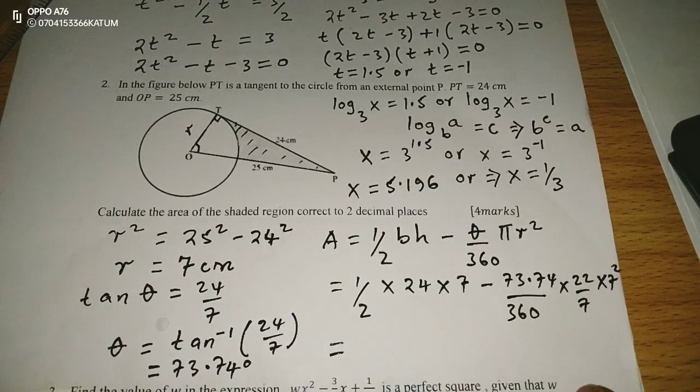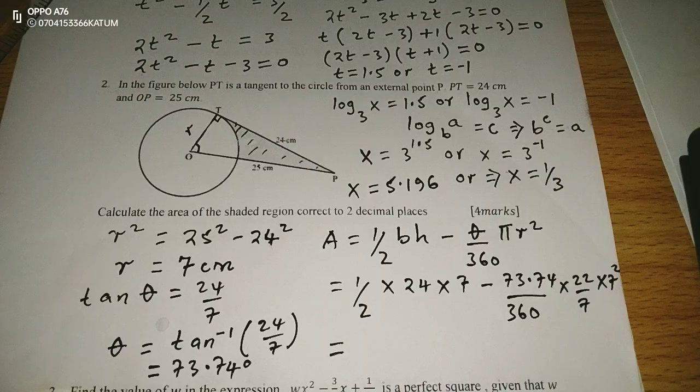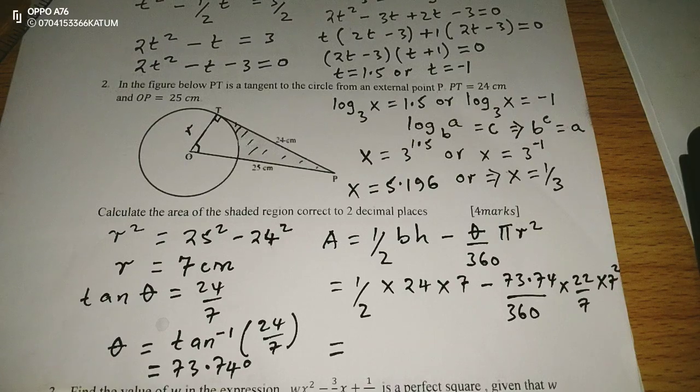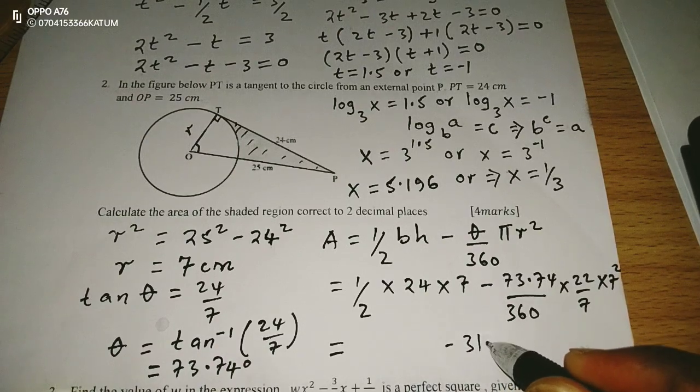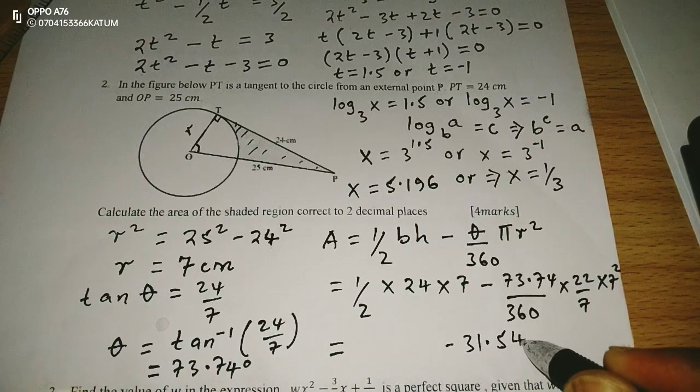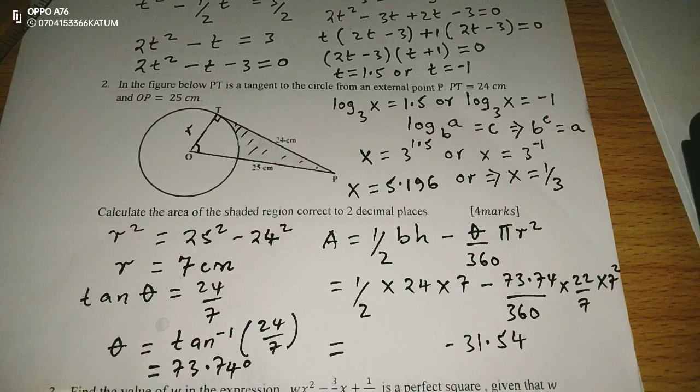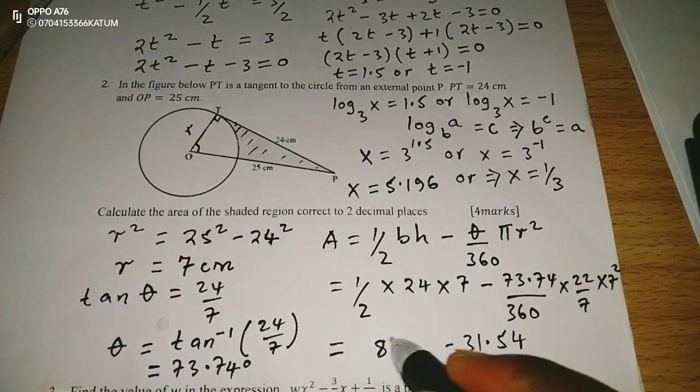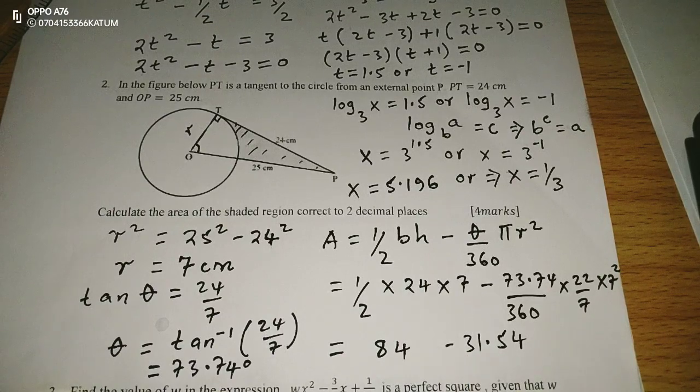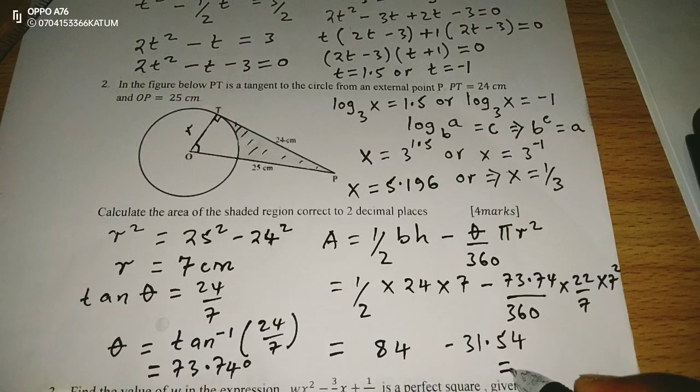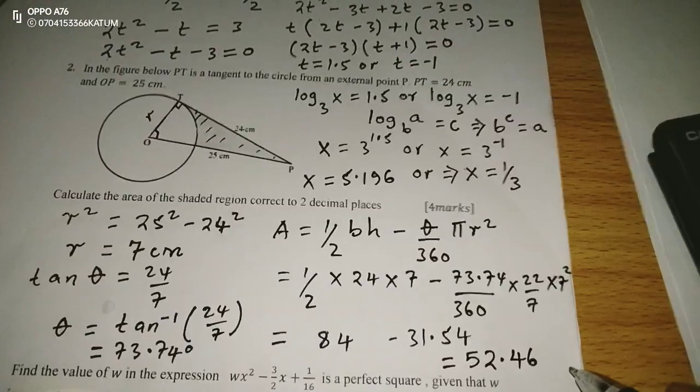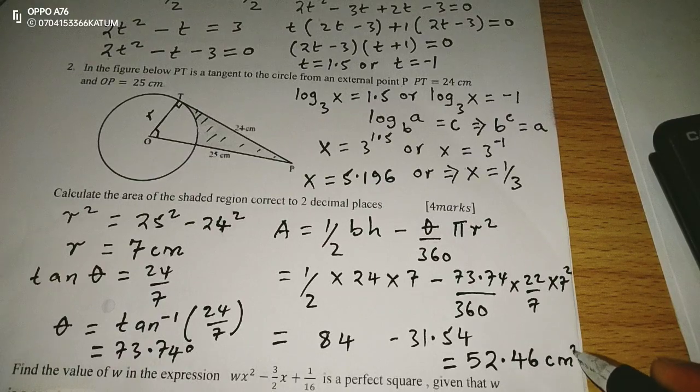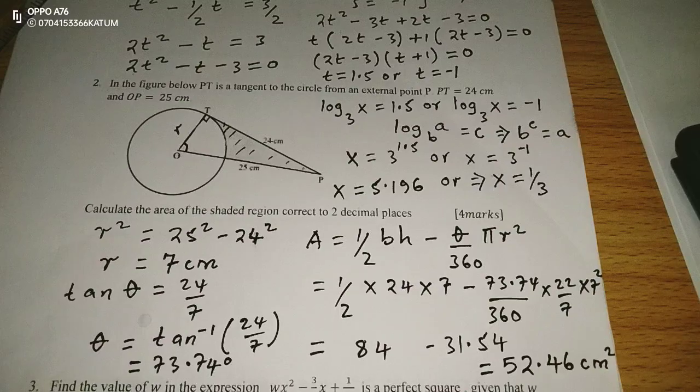I can compute this side first, so that I multiply 73.74 by 22 by 7 squared. Then, I divide by 360 by 7. This is giving me 31.54 to 2 decimal places. Then, on the other side, I'm going to have half times 24, which is 12, then multiplied by 7, 84. So, when I take 84 minus 31.54, this is giving me 52.46 square centimeters. So, that is how we get area of that shaded part.